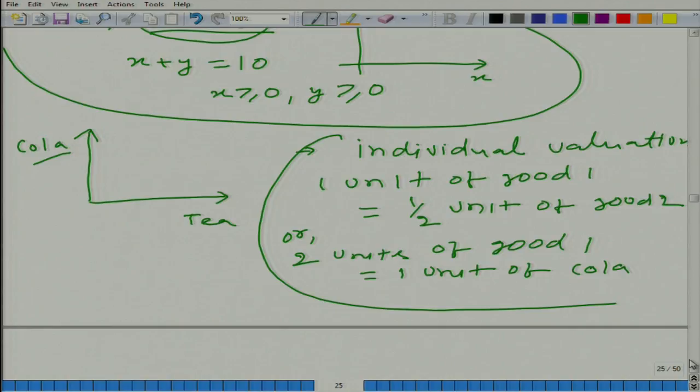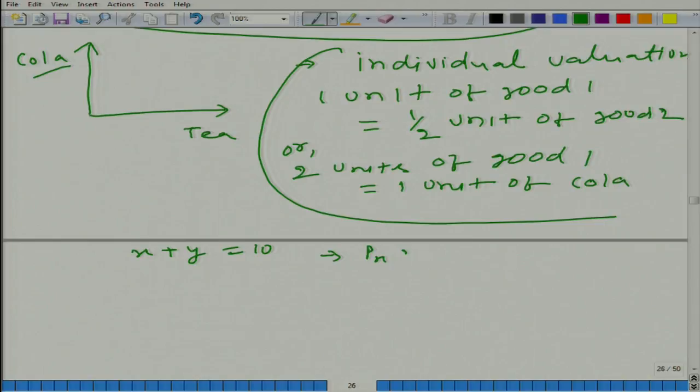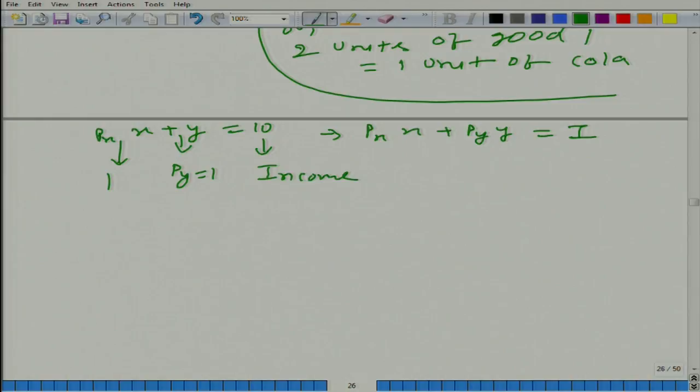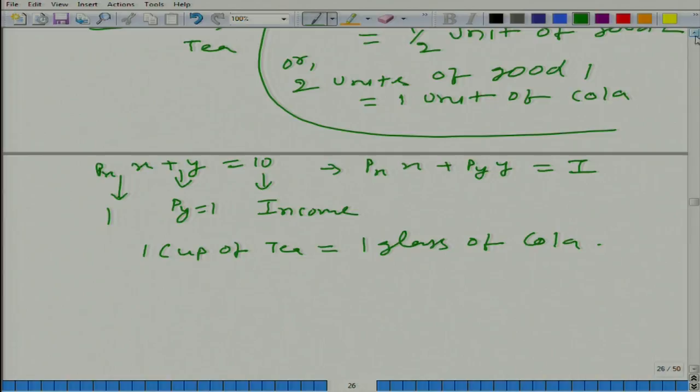What it is saying is that when you go to canteen or somewhere, what you want is either two cups of tea or one cola. You are indifferent between two cups of tea and one glass of cola. This is your own exchange rate. Now, from the market we have x plus y is equal to 10. Typically our budget curve is px times x plus py times y equals i.